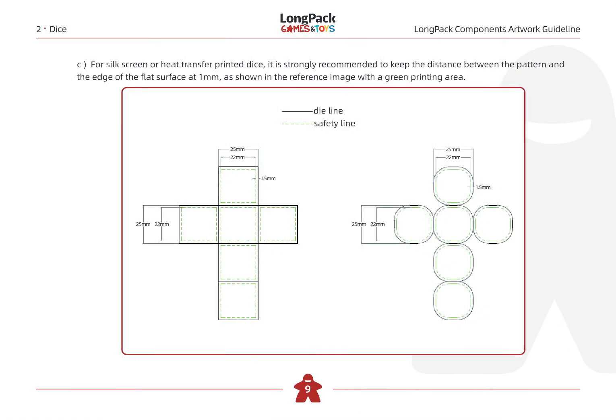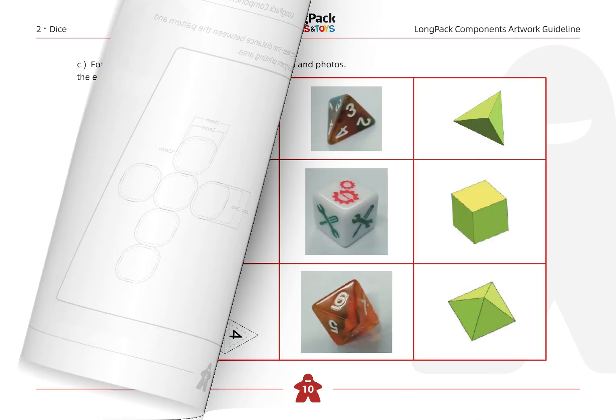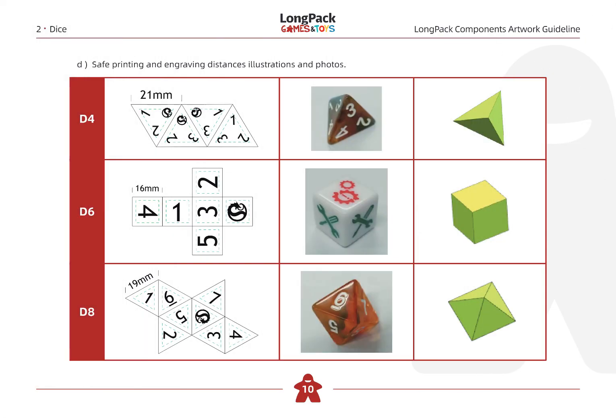For silkscreen or heat transfer printed dice, it is strongly recommended to keep the distance between the pattern and the edge of the flat surface at 1 mm, as shown in the reference image with the green printing area. Safe printing and engraving distances, illustrations, and photos are provided.